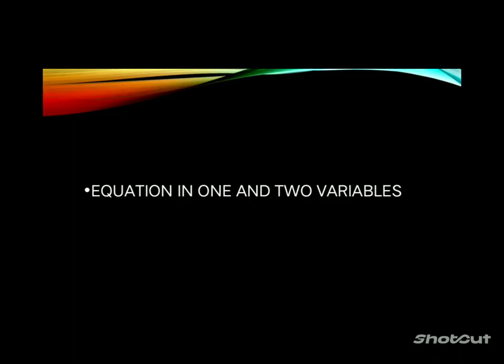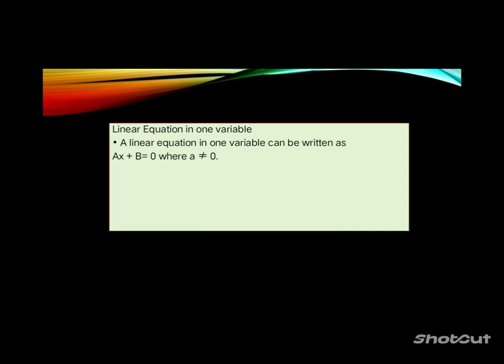For today's discussion, I will discuss the equation in one and two variables. Let's proceed. A linear equation in one variable can be written as ax plus b equals zero, where a is not equal to zero.